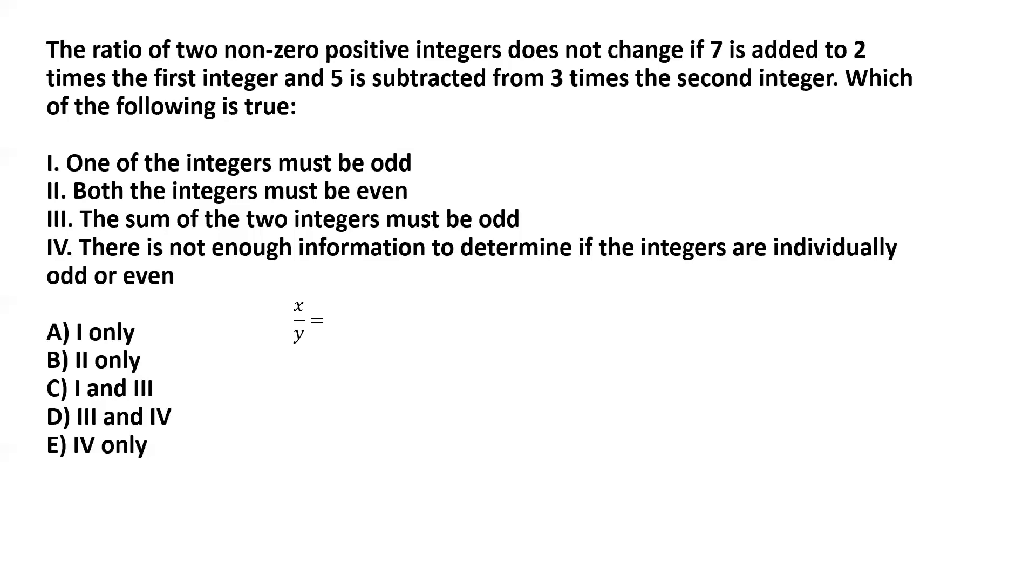The ratio remains unchanged, so it's still x by y. If we add 7 to 2 times the first integer, that makes the numerator 2x plus 7, and 5 is subtracted from 3 times the second integer, making the denominator 3y minus 5. This is the equation we have from the very first line of the problem.